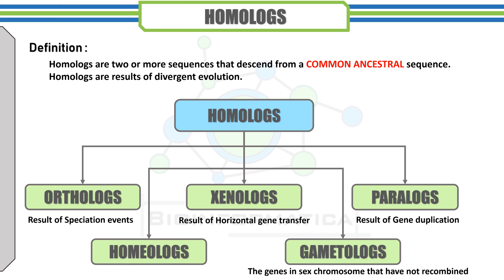Homologous sequences, or homologues, are two or more sequences that descend from a common ancestral sequence. Hence we can say these are the results of divergent evolution. Homologues can be further classified into several classes like orthologues, paralogues, xenologues, homeologues, and analogues. We are going to have brief ideas about all these classes in upcoming slides.